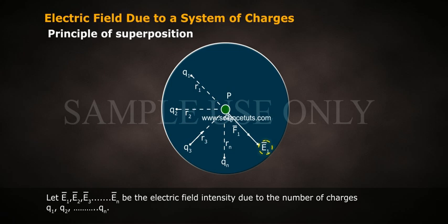Let E1 bar, E2 bar, E3 bar, and so on, En bar, be the electric field intensity due to the number of charges Q1, Q2, and so on, Qn.